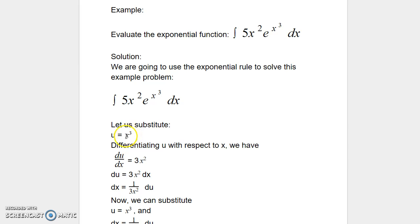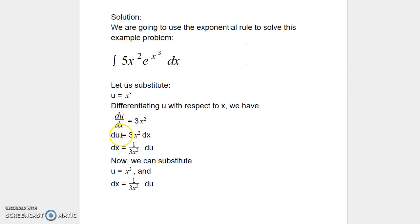du/dx of x³ is 3x^(3−1), which is 3x². So I can also rewrite this as du = 3x² dx. If I have to express it in terms of dx, I can write it as dx = 1/(3x²) du.